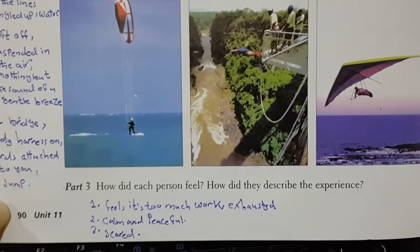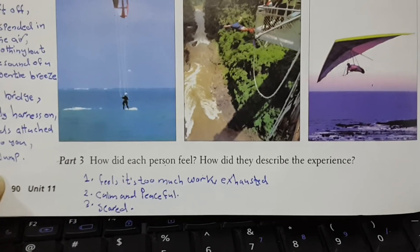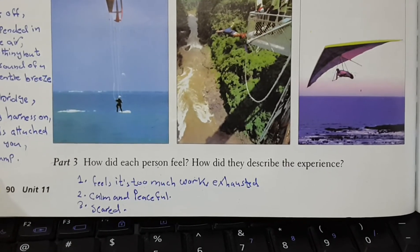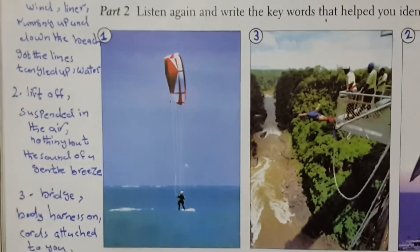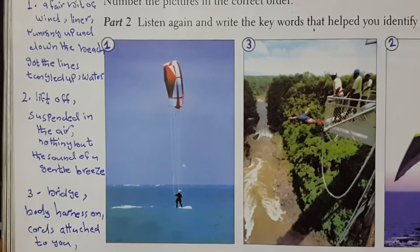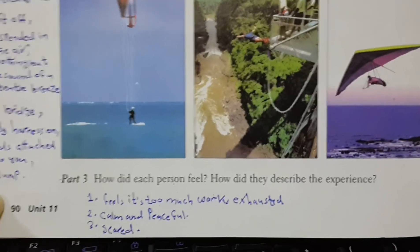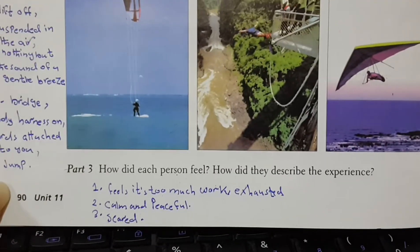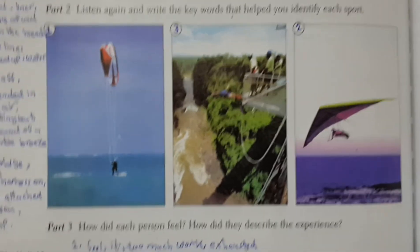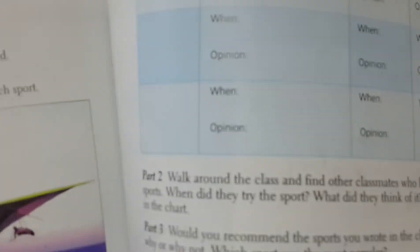The third requirement is identifying the feelings of each speaker. The first person felt it was too much work and was exhausted. The second person — the hang glider — said it was calm and peaceful. The third person — the bungee jumper — said it was scary.